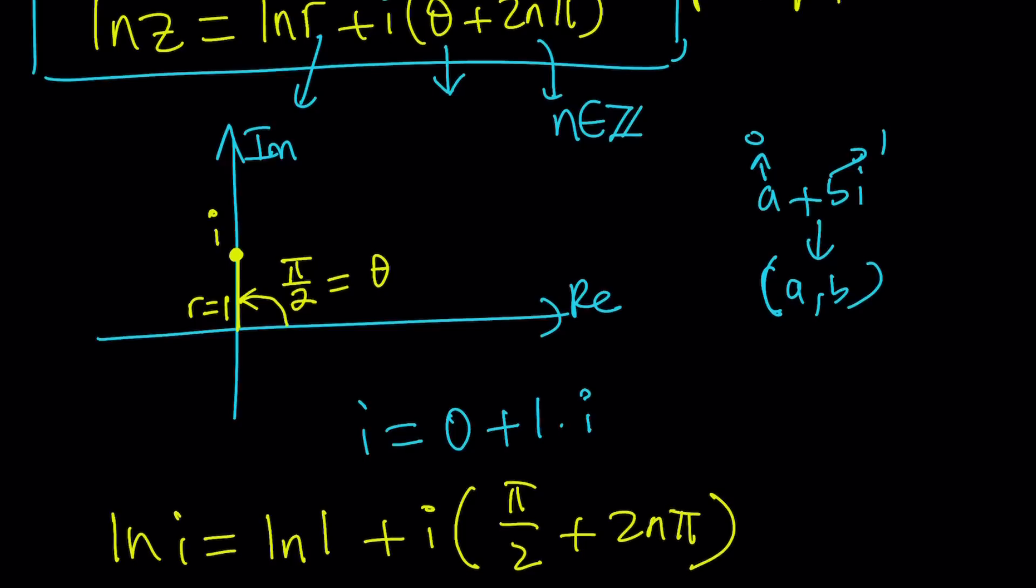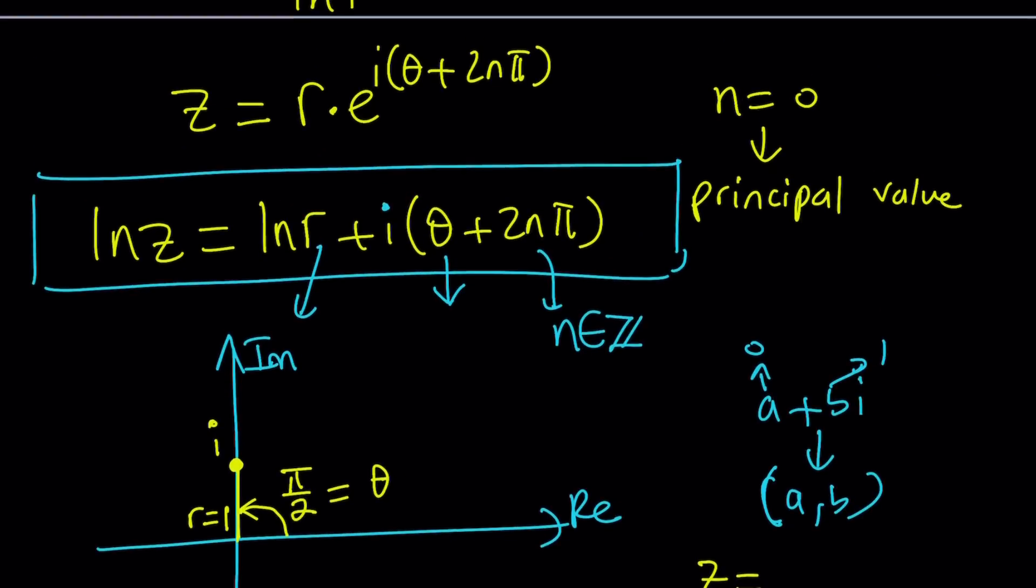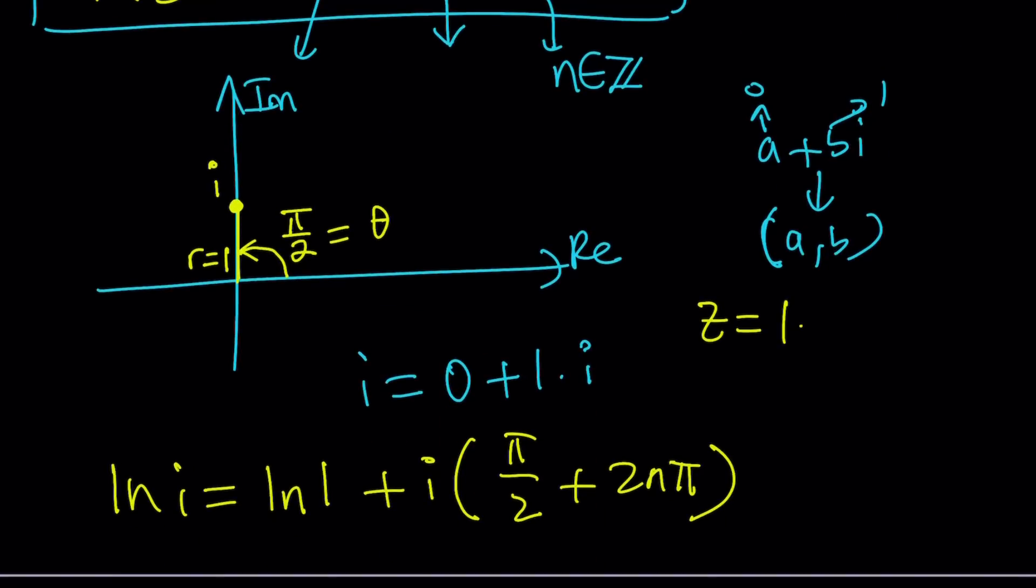Okay? So you could also do this. You could write your z as 0 plus 1i, and then it will be, by using this formula, right? By using this, you could basically write it as 1 times e to the power i times π over 2 plus 2nπ, and then ln both sides, you would pretty much get the same thing. And this would be i, obviously.